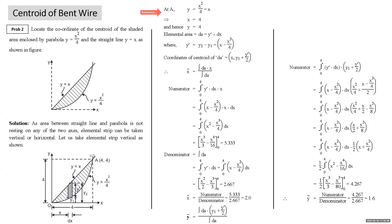At point A, the two values of y are equal. Setting x²/4 = x gives x = 4 and y = 4, so the coordinates of point A are (4, 4). The elemental area dA = y' dx, where y₂ = x (upper curve) and y₁ = x²/4 (lower curve), so y' = x − x²/4. The centroid of the elemental strip has coordinates: x-coordinate ≈ x, and y-coordinate = y₁ + y'/2.